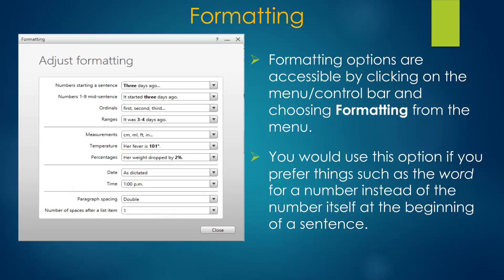Text formatting options are available from the menu as well. Use this to set your preferences, such as having numbers at the beginning of sentences spelled out, having measurements abbreviated, using 24-hour time, etc.